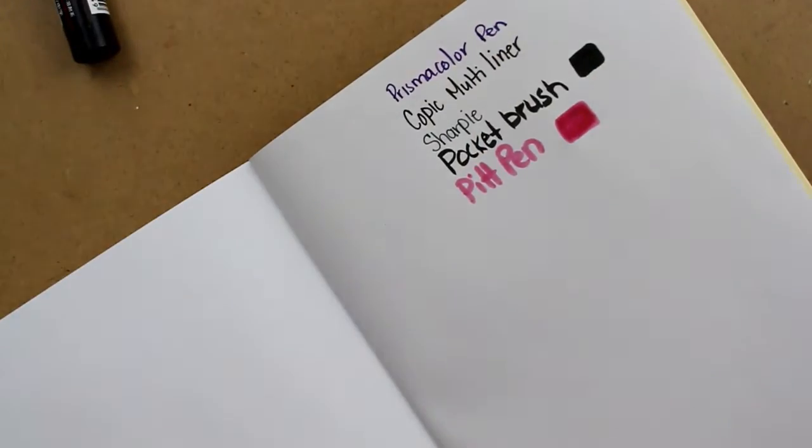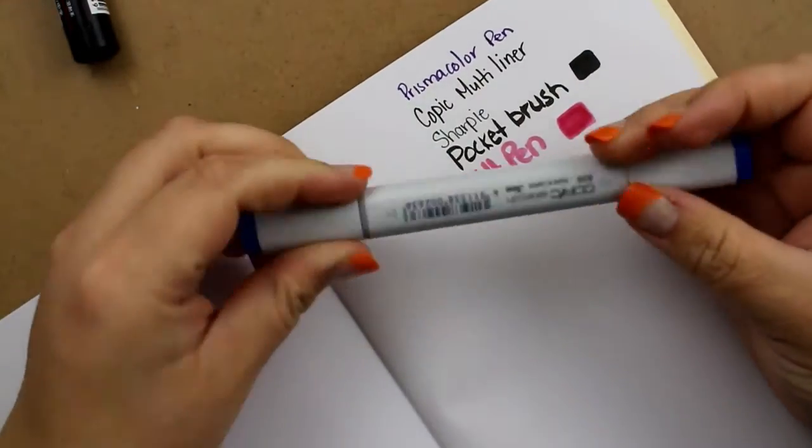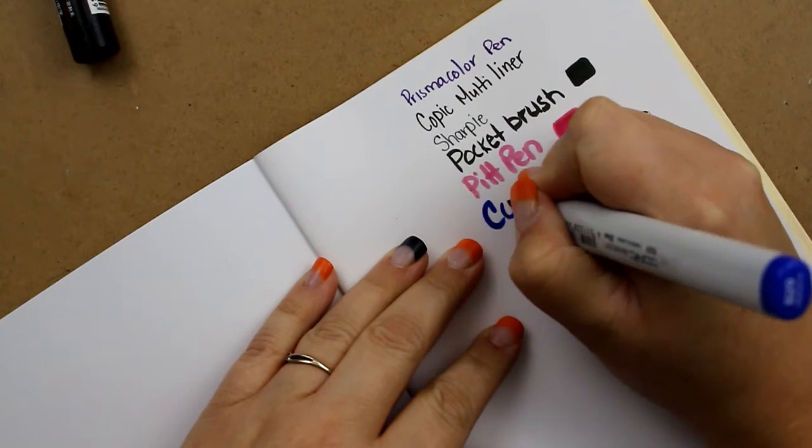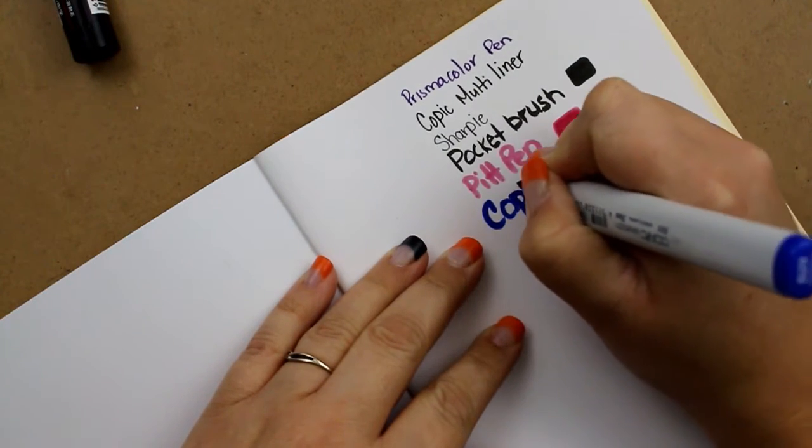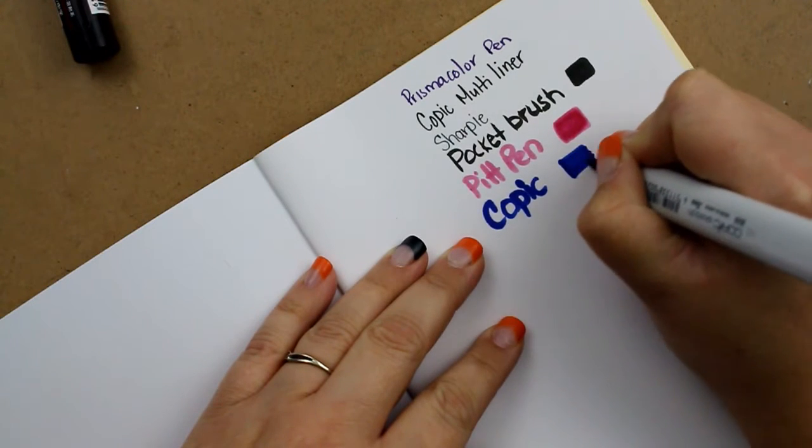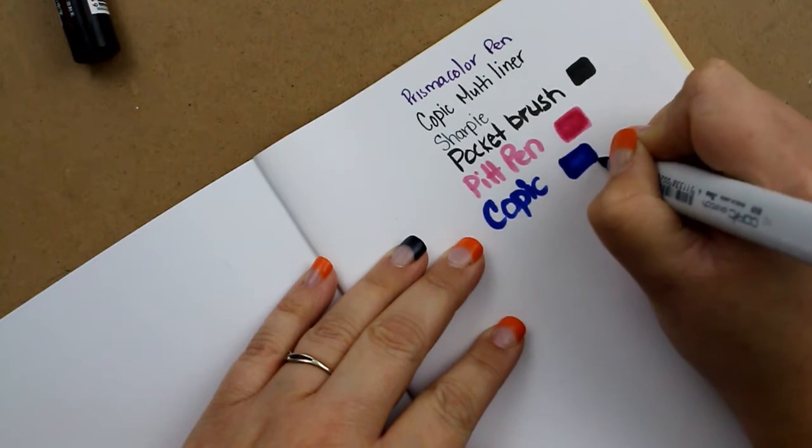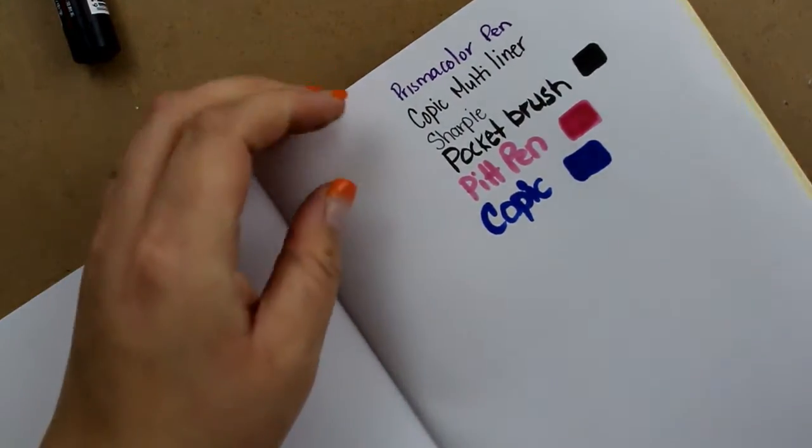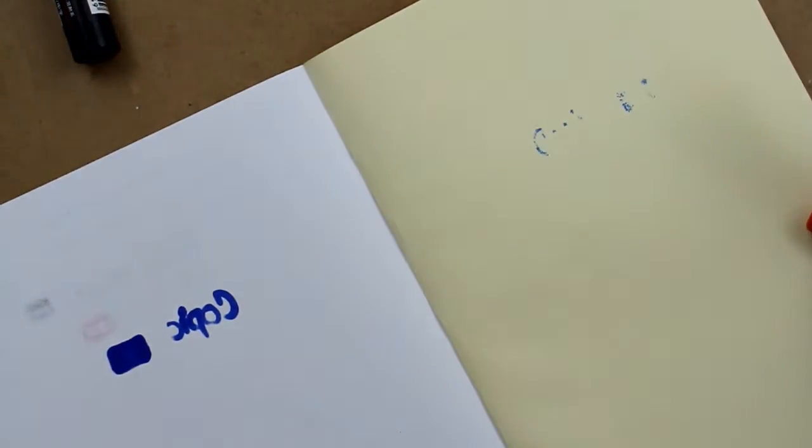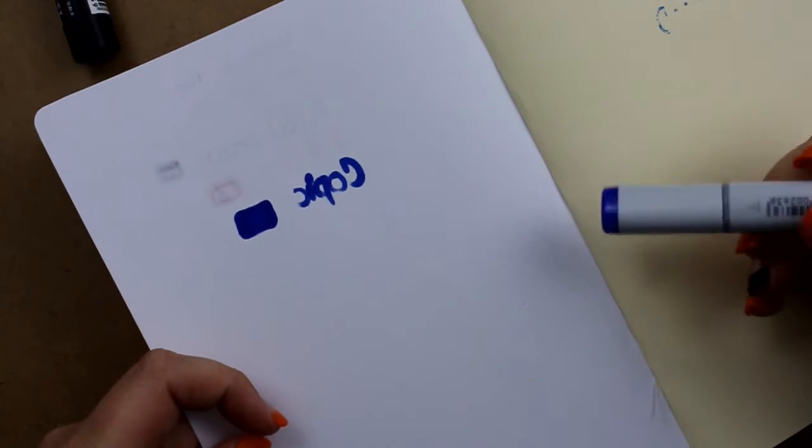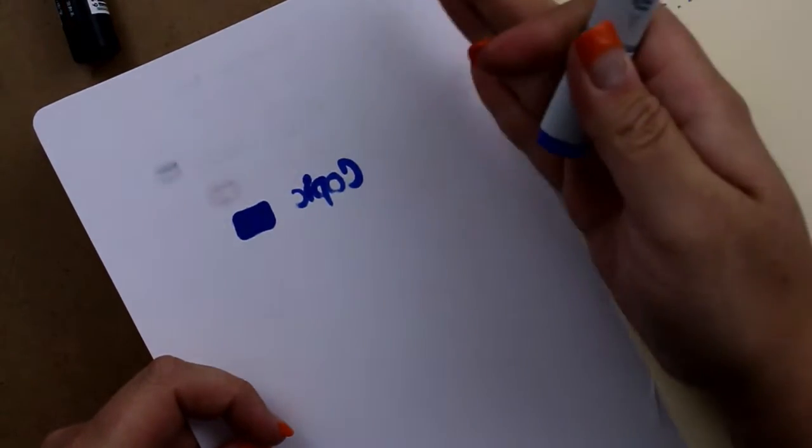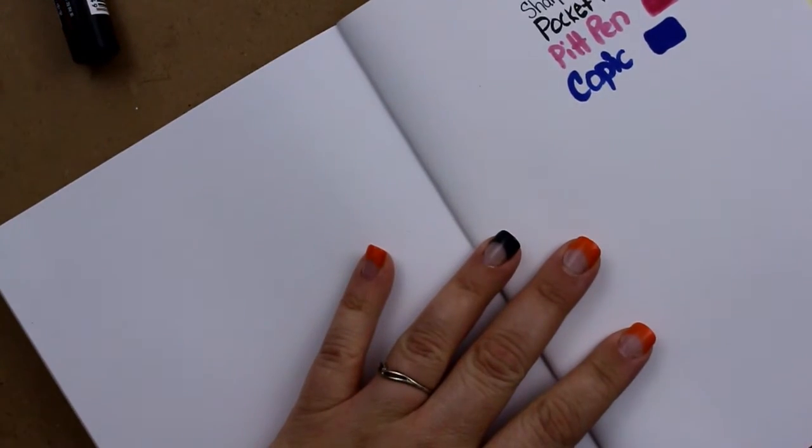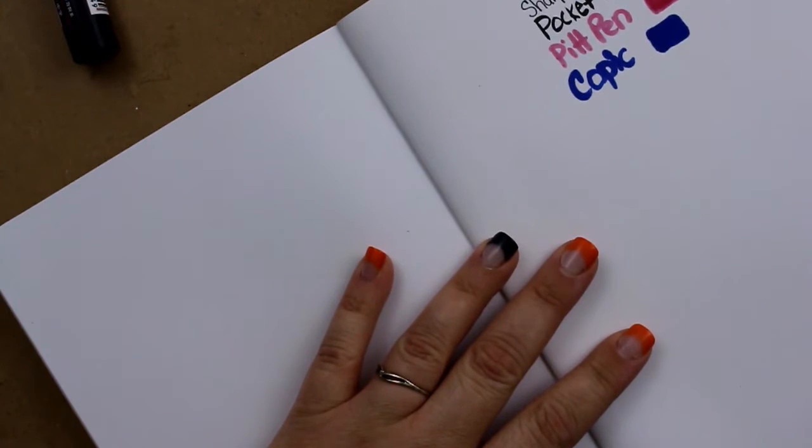So the next one here, I'm going to use a Copic, just a basic Copic marker. And again, I'm going to put that. Okay. So this is not eating up the paper as much as the pit pen. But let's see. Oh, it goes through really, really bad. So if you plan on using Copics in this kind of a book, you will definitely need to have a protector sheet. If not, stuff like this is going to happen.